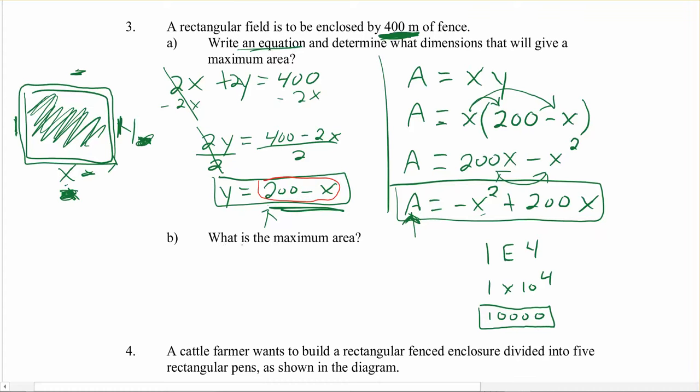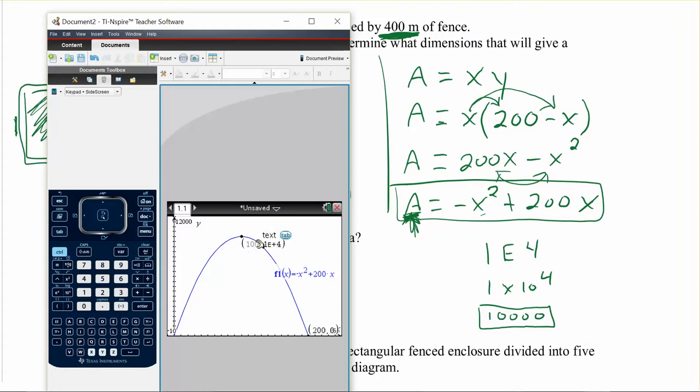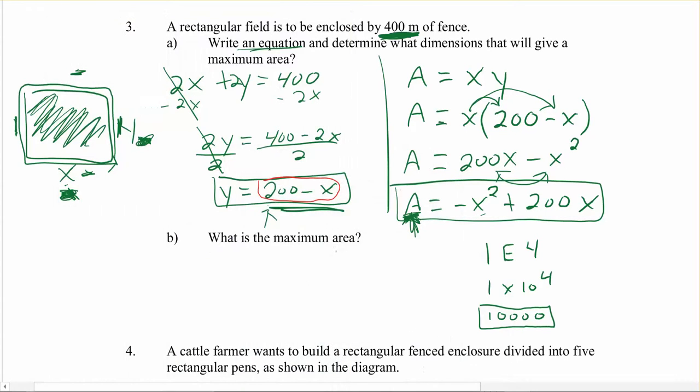So when it says what is the maximum area? Well, this is my Y value, right? So when I did that, that's going to be a hundred, or sorry, 10,000. So that's going to be my maximum area there, right? Now the other one, so I figured out my maximum area, I can't did B first.